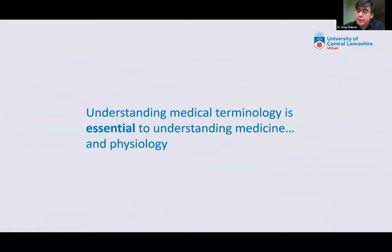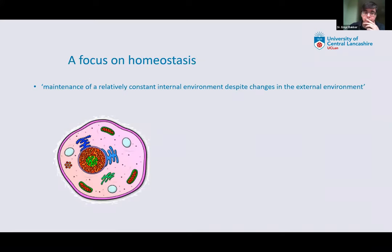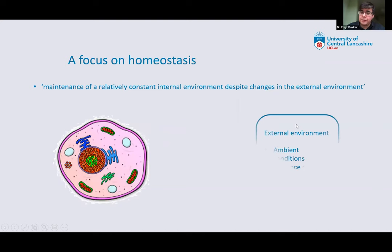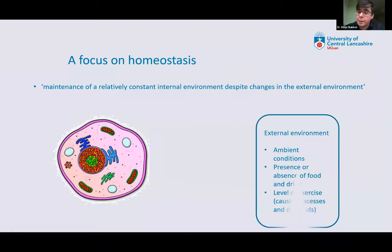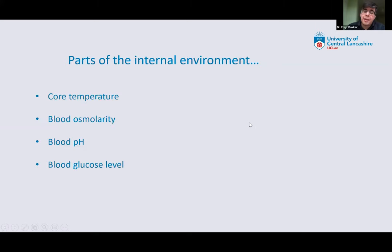So I just want you to appreciate the fact that when you break down those words, life becomes easier. Understanding medical terminology is essential to understanding both medicine and physiology. We're going to talk now about homeostasis — something that you've come across before. Homeostasis is the maintenance of a relatively constant internal environment despite changes in the external environment. Your external environment can include things like ambient conditions, the presence or absence of food and drink, and the level of exercise you undertake.